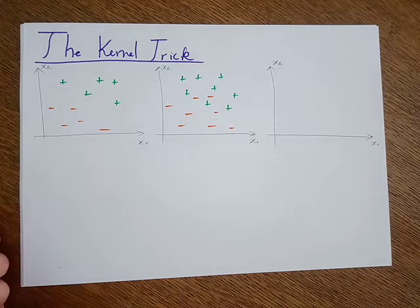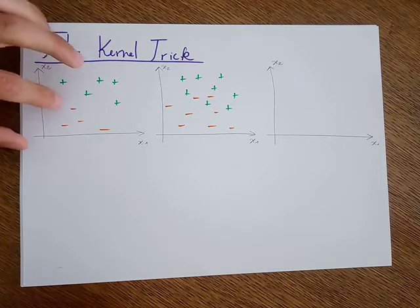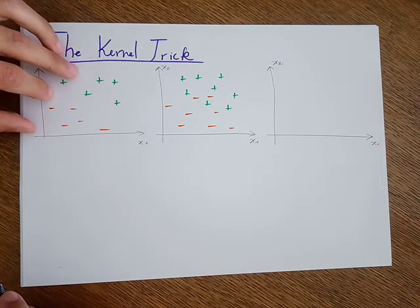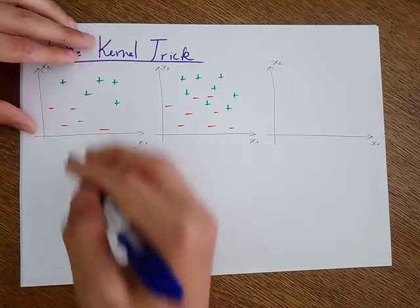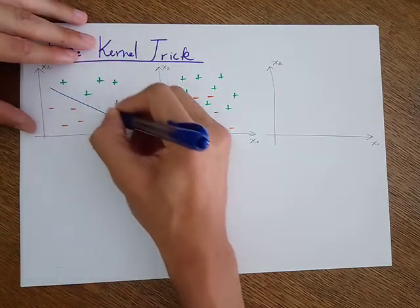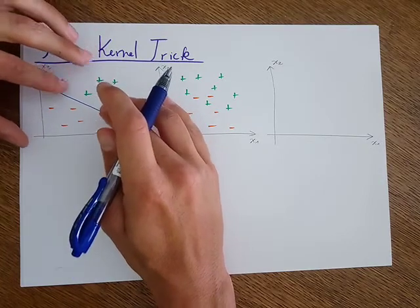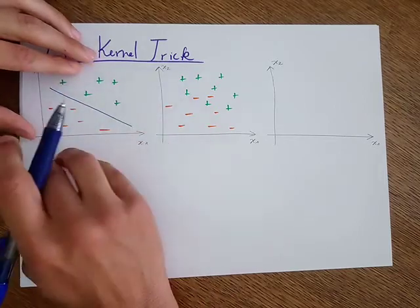Welcome back. So far I talked about two types of support vector machines: the hard version and the soft version. The hard version assumes that the data is linearly separable — perfectly linearly separable like in this case — so I can create a linear boundary and separate my data perfectly. That is, all these samples are correctly classified. There is no mistake on training samples.